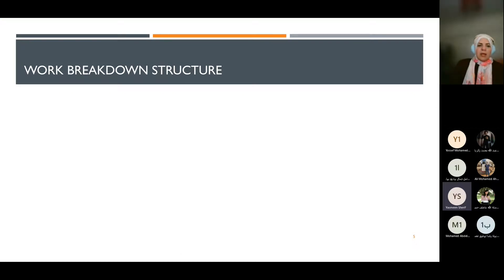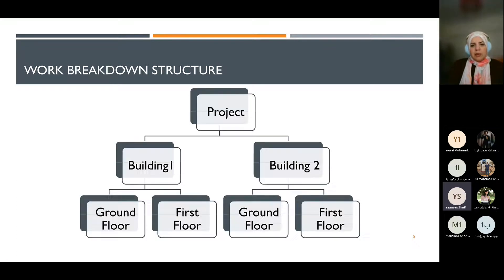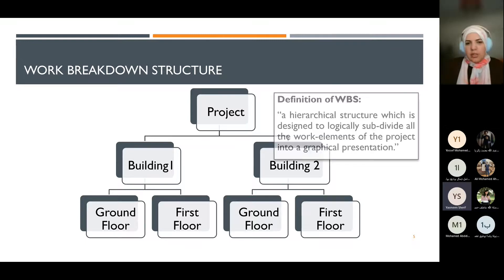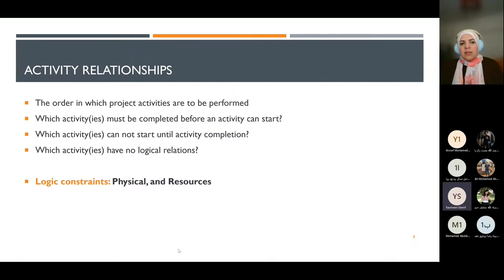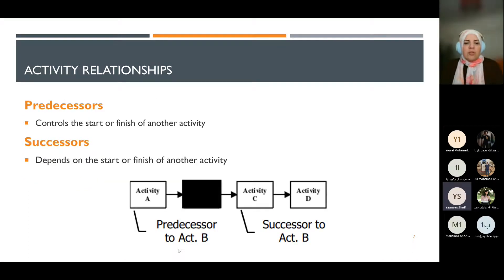The important work we've done includes the WBS, breaking the project into smaller work elements. The lowest level is the work package, which we decompose into a list of project activities. We then examine the relationships between activities, considering physical and resource constraints, so we know the predecessor and successor activities.